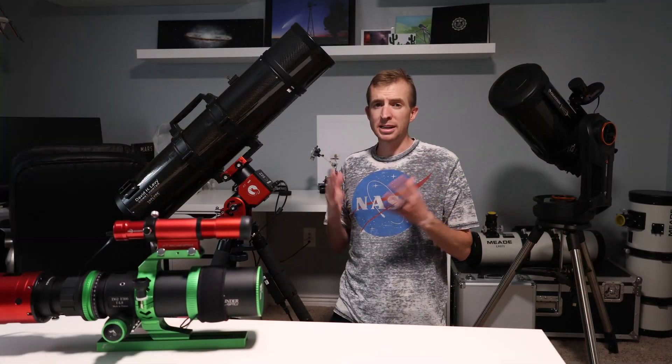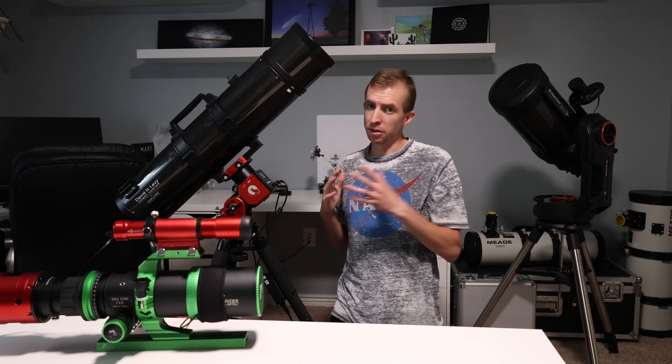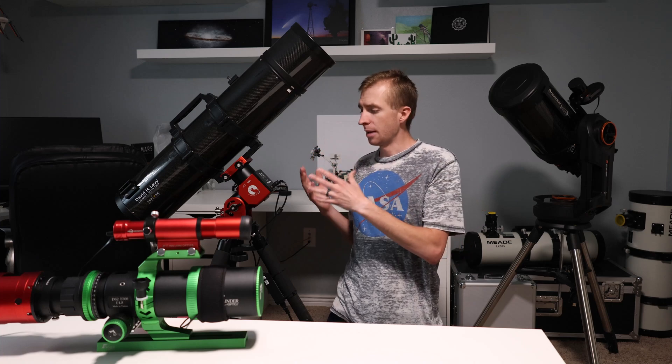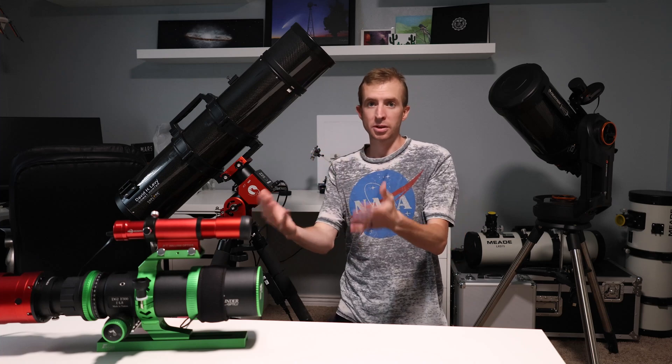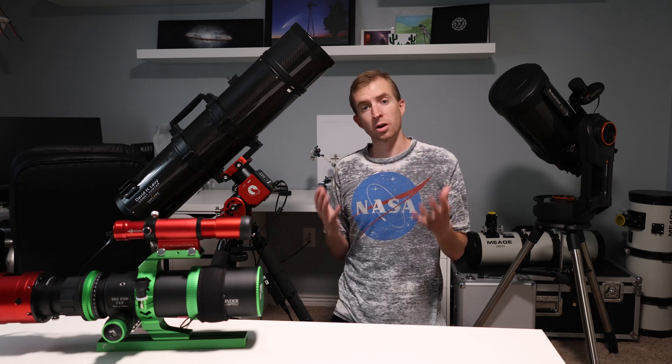The nice thing about the AM3 is it's not so portable that you can't take bigger telescopes with you to a dark sky site. So for example, the AM3 works awesome with small refractors, and I think that's pretty obvious. Small refractors, small mount, they're going to work really well together.